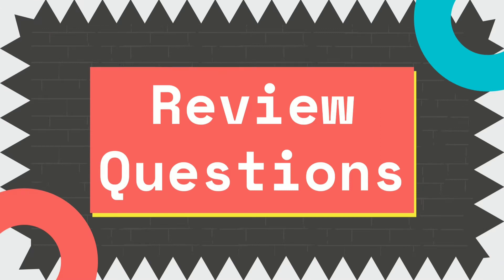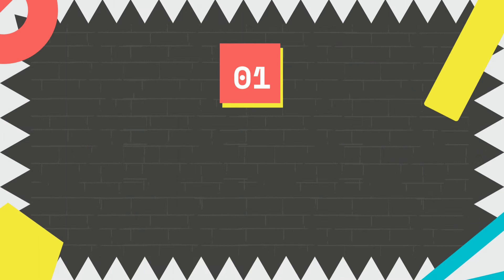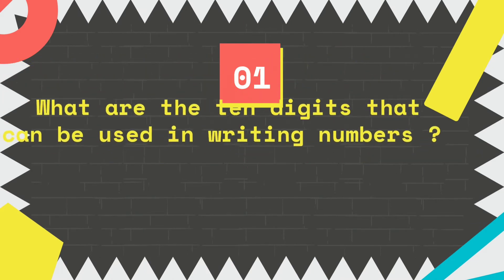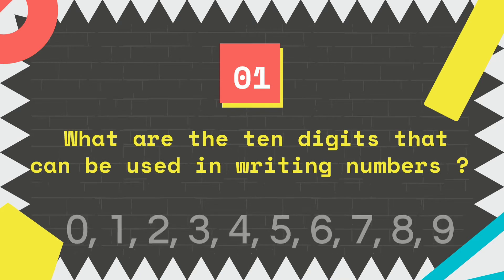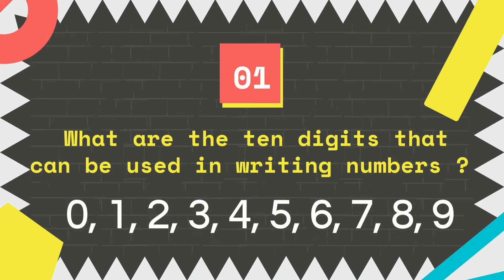Let us answer some review questions. Number 1: What are the 10 digits that can be used in writing numbers? We have 0, 1, 2, 3, 4, 5, 6, 7, 8, and 9.